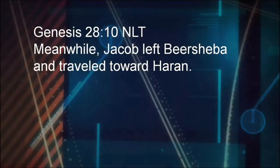From Genesis 28:10 on, the main character is Jacob until we get to Joseph. So now we begin the study of Jacob's life as an adult. We've had Jacob introduced to us, but as a child. Now we're going to focus on the adult life of Jacob. Turn to Genesis chapter 28. Let's read verse 10 again: 'Meanwhile, Jacob left Beersheba and traveled towards Haran.'